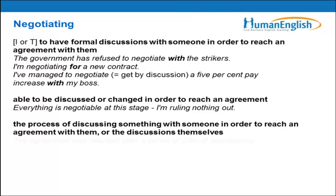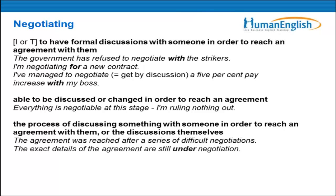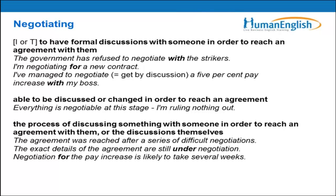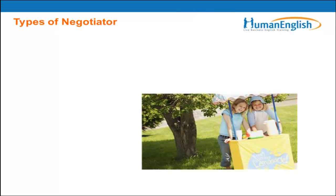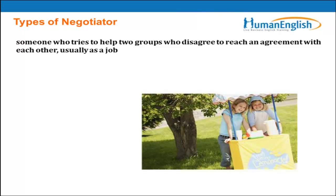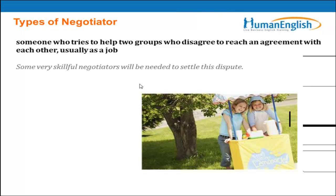Negotiate is a verb. We also have an adjective form: negotiable — meaning able to be discussed or changed in order to reach an agreement. For example: 'Everything is negotiable at this stage. I'm ruling nothing out.' And it can also be a noun — negotiation — meaning the process of discussing something with someone in order to reach an agreement. Examples: 'The agreement was reached after a series of difficult negotiations.' 'The exact details of the agreement are still under negotiation.' 'Negotiation for the pay increase is likely to take several weeks.' So negotiate can be a verb, an adjective, or a noun, used with different prepositions.